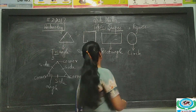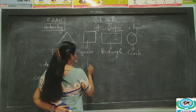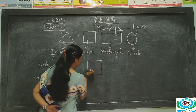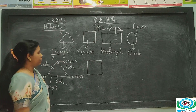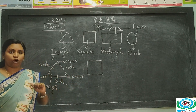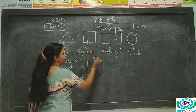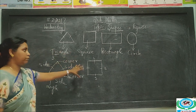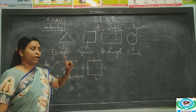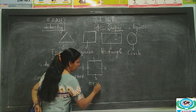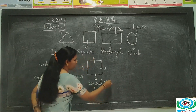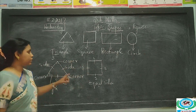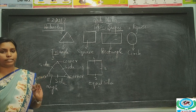Now this is a square. A square is made up of four sides: side one, side two, side three, and side four. These four sides are equal — a square has four equal sides.